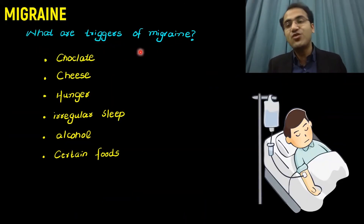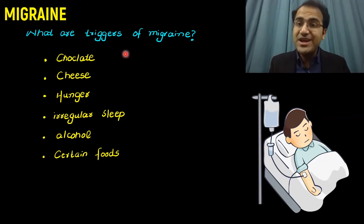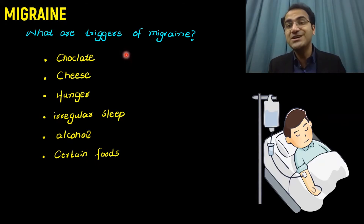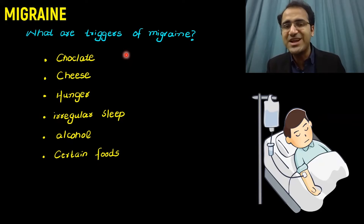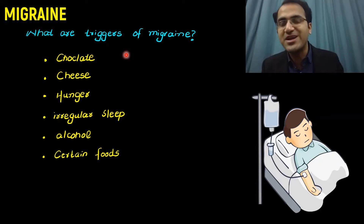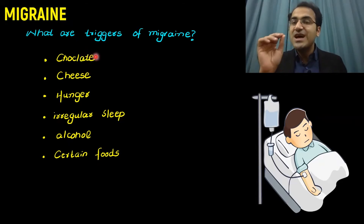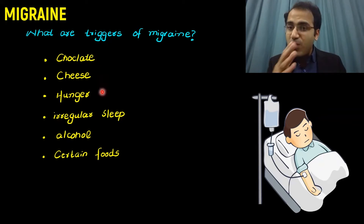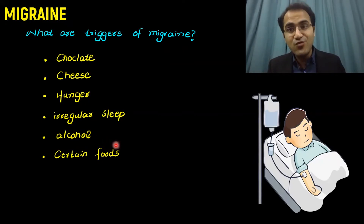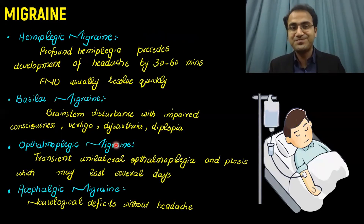What are the triggers of migraine? Triggers of migraine are known to the patients themselves. They will tell you: 'Doctor, whenever I eat chocolates I get migraine headache,' or 'whenever I am hungry for a longer time I get migraine headaches.' The triggers can be chocolate, cheese, hunger, missing a meal, irregular sleep pattern, alcohol, or certain types of foods.